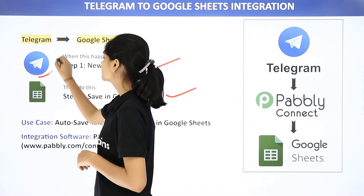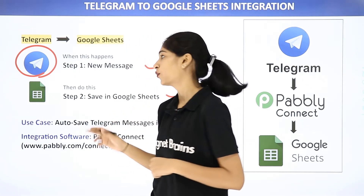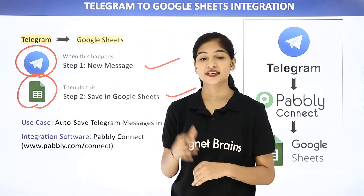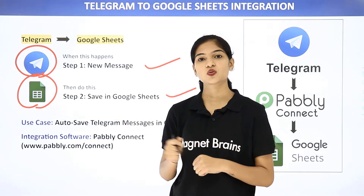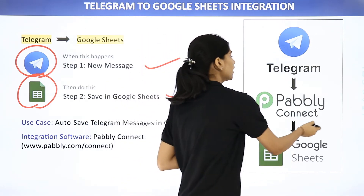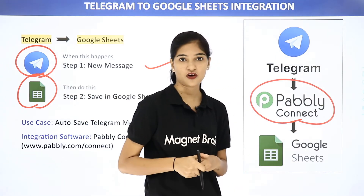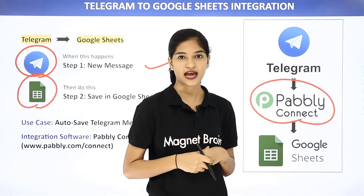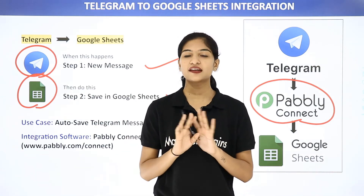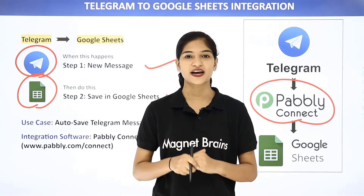Telegram is a software application where you can send your messages, whereas Google Sheets is an online spreadsheet program. The issue is that Telegram and Google Sheets don't have any integration between them. That is why we are going to use Pabbly Connect, a third party application software, to integrate both these software applications. The best part is you don't require any knowledge of coding.